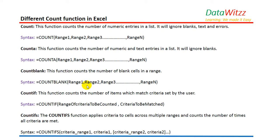The third function is COUNTBLANK. This function counts the number of blank cells in a range. The syntax remains the same — we just change the name to COUNTBLANK instead of COUNT. The fourth function is COUNTIF, which counts the number of items that match criteria set by the user.